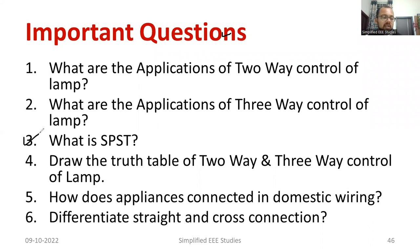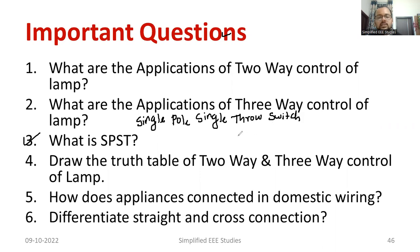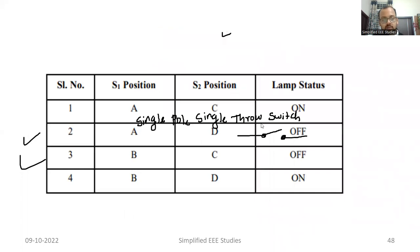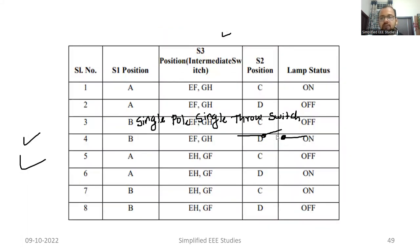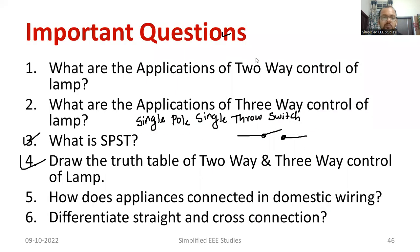Question number three: what is SPST? SPST is nothing but single pole, single throw switch. This type of switch is called a single pole, single throw switch. Draw the truth table of two-way and three-way control of lamp — I have just shown you. These are the truth tables, you can follow up. Before getting permission for conducting the experiment, you are supposed to produce the truth table and answer accordingly.